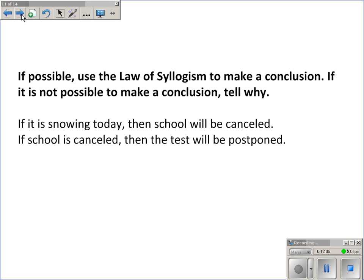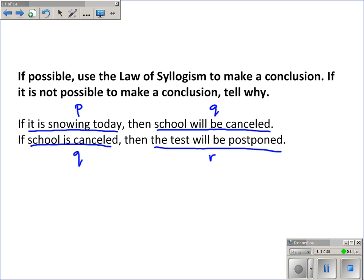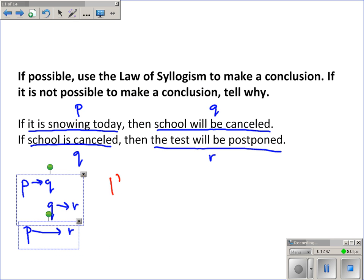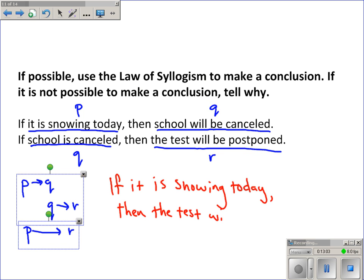Now using the law of syllogism if possible: if it is snowing today — P — then school will be canceled — Q. If school is canceled — Q — then the test will be postponed — R. I'm given P to Q and Q to R, so I can jump from P to R and conclude: if it is snowing today, then the test will be postponed.